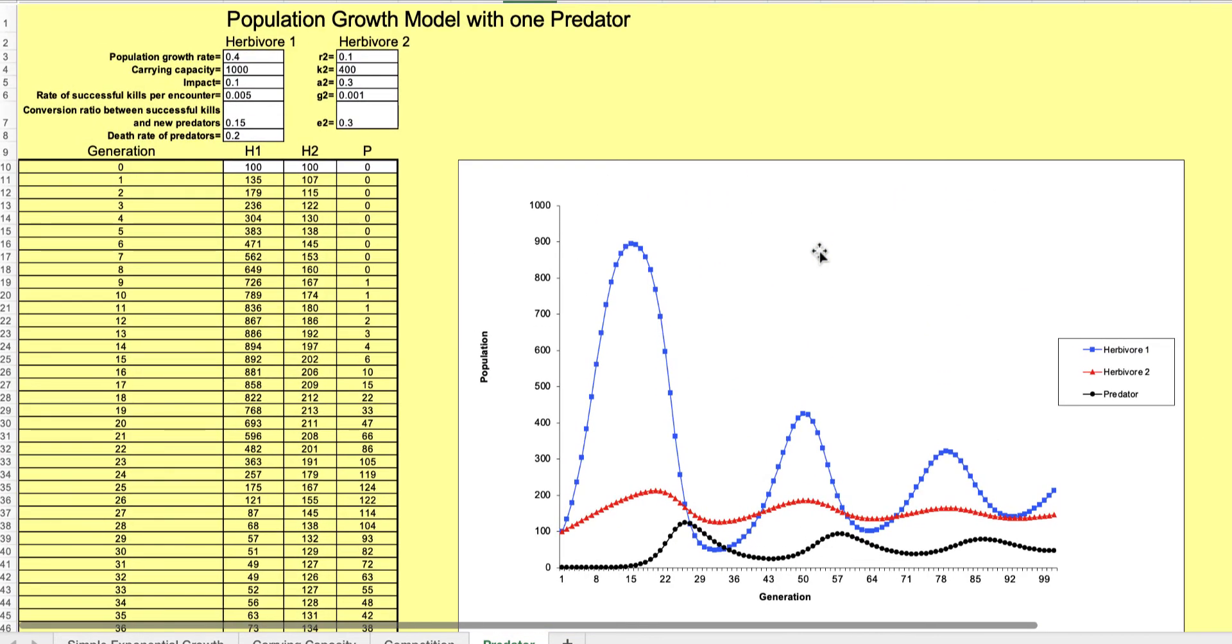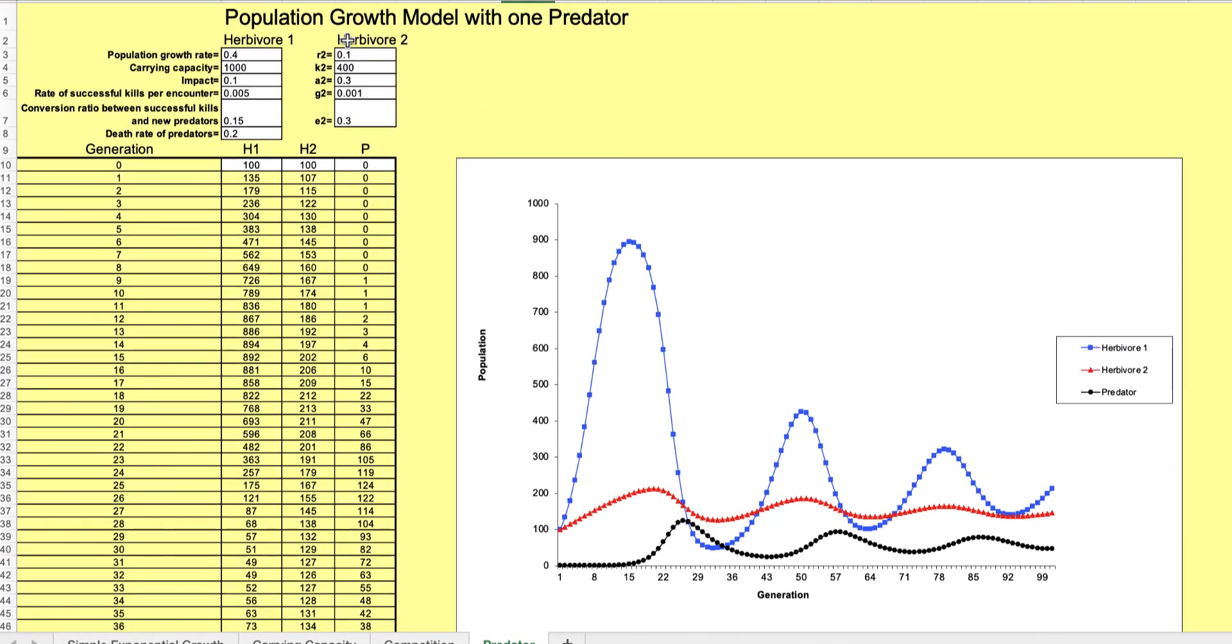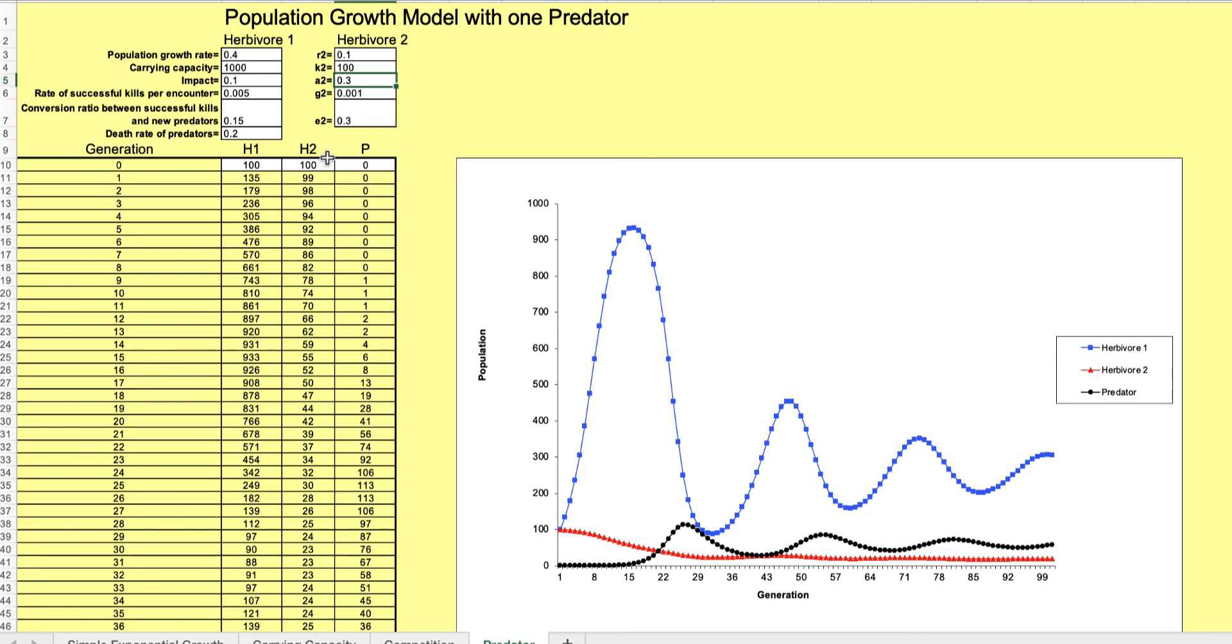I shouldn't call them both herbivores, I should call one of these carnivore. It eats the other one and you can play with the capacity. Let's say that this one's actually a carnivore, I can only hold a hundred of them. And then oh here's, oh sorry, this is two herbivores and a predator, I apologize, I didn't know my own model.